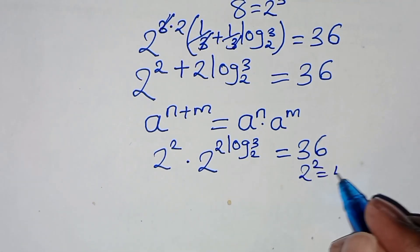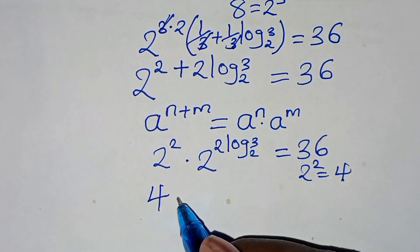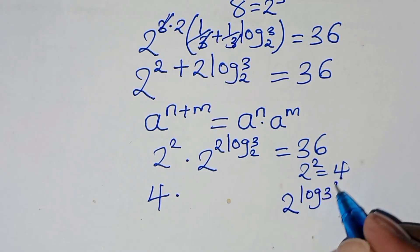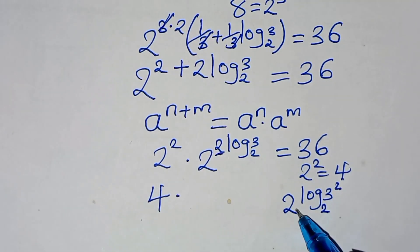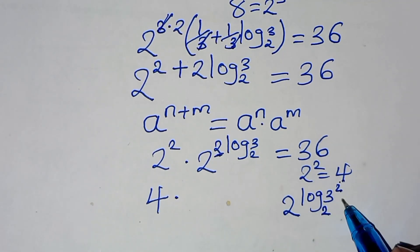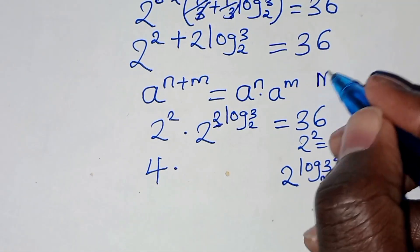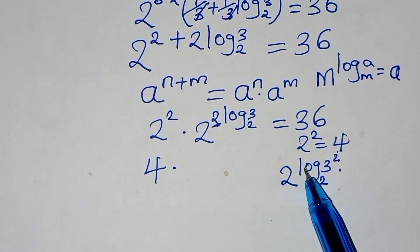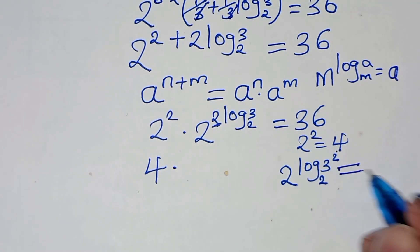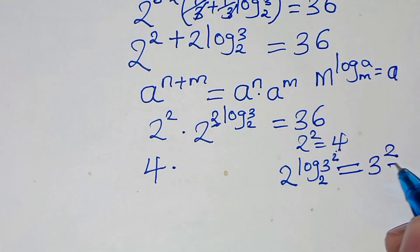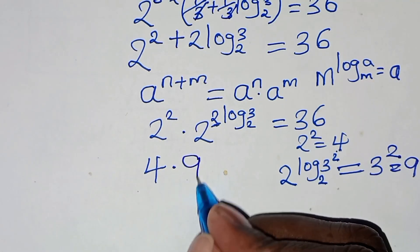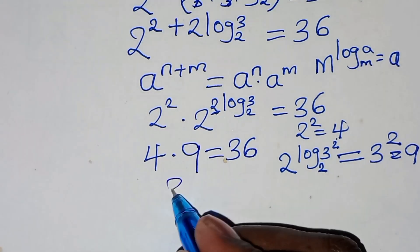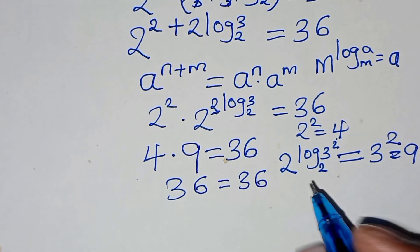Now 2² equals 4, and 2^(2·log₂3) equals 2^(log₂(3²)). Applying the logarithm property that m^(log_m a) equals a, we get 2^(log₂(9)) equals 9. So 3 squared equals 9. Substituting back, we have 4 times 9, which equals 36. The left-hand side equals the right-hand side, confirming that x equals 1/3 plus (1/3)·log₂3 satisfies the equation.